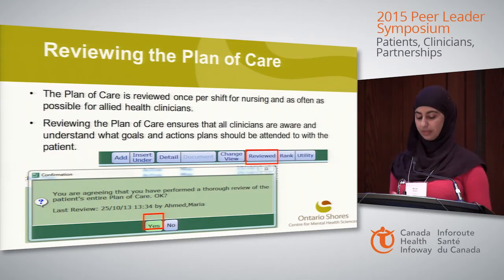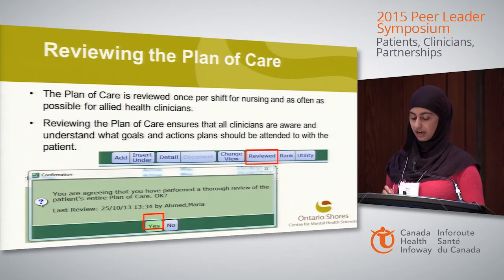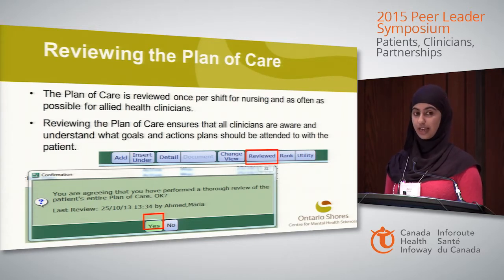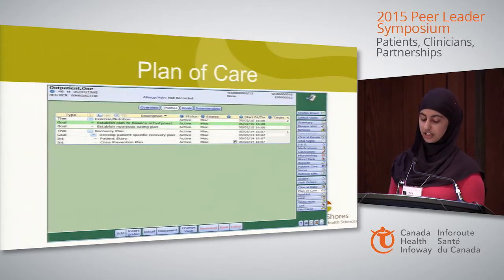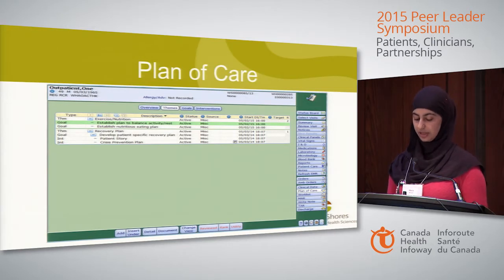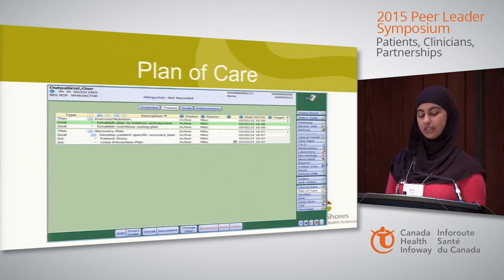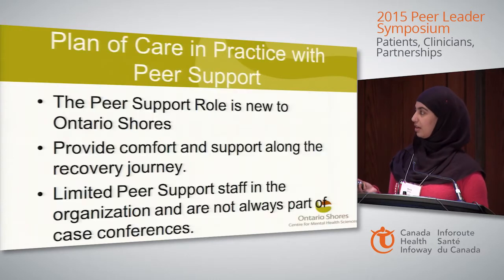For reviewing the care plan, a nurse is required to review it once per shift, and as often as possible for allied health professionals. Selecting yes verifies the review and it is logged in the system. Once a patient is discharged and becomes an outpatient, the plan of care continues and follows them to maintain a continuum of care. Outpatient clinicians can view the full care plan and print out portions to share with the patient.